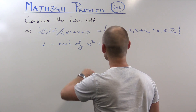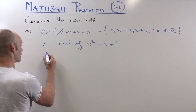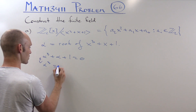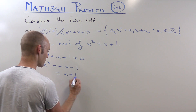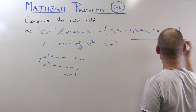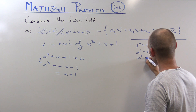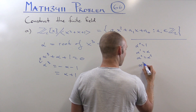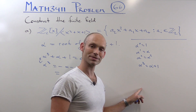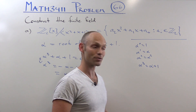Let's see whether alpha might do the job. From the fact that alpha is a root, we have α³ + α + 1 = 0, so α³ = −α − 1 = α + 1, because we're dealing with binary numbers. So: α⁰ = 1, α¹ = α, α² = α², α³ = α + 1. We'll continue finding powers until we hopefully reach α⁷ and have all 7 non-zero elements of the field.